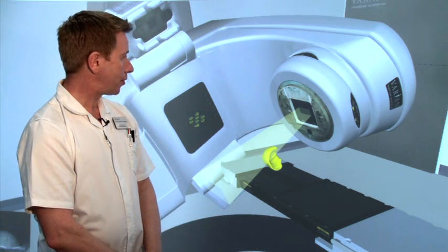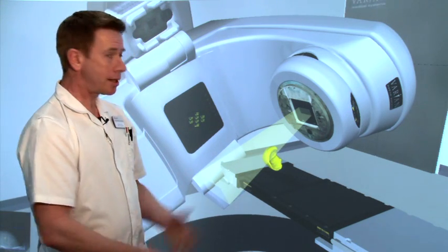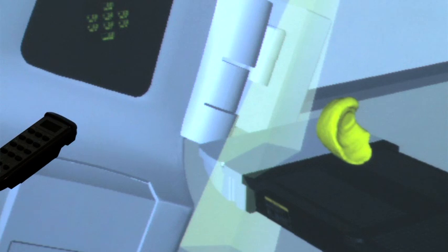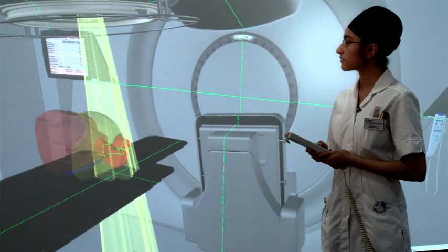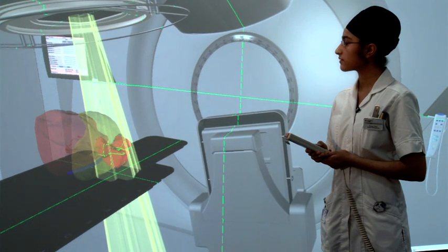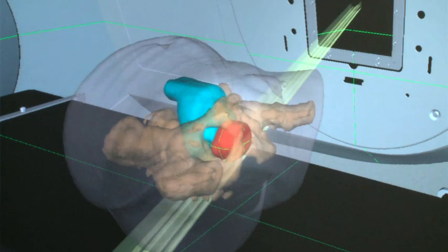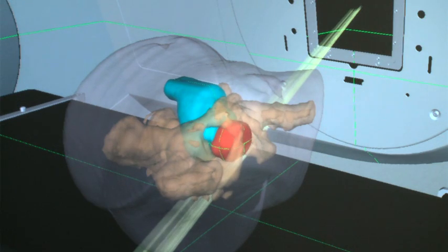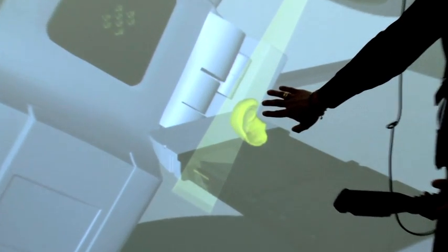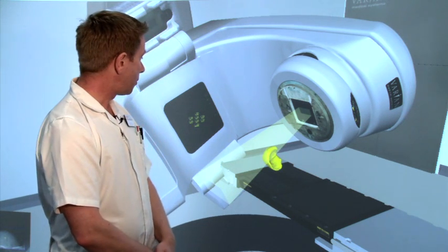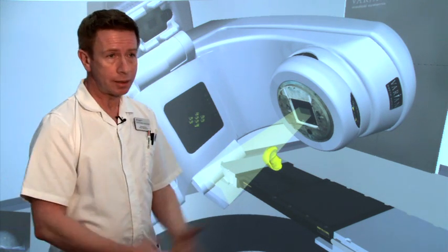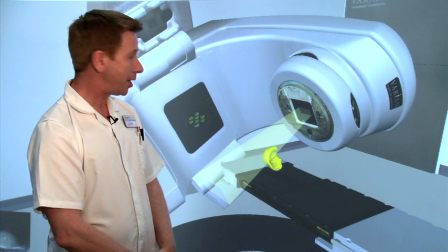What the VERT system is very good at is letting us actually see inside a patient. Obviously, when you've got a real patient in the clinical setting, you can't see where their lung is, but with this system you can take all the bits and pieces of the rest of their body away and actually see the organ at risk, for example here the lung which we're trying to avoid. You can also see the beam, which is something you'd never see in reality.